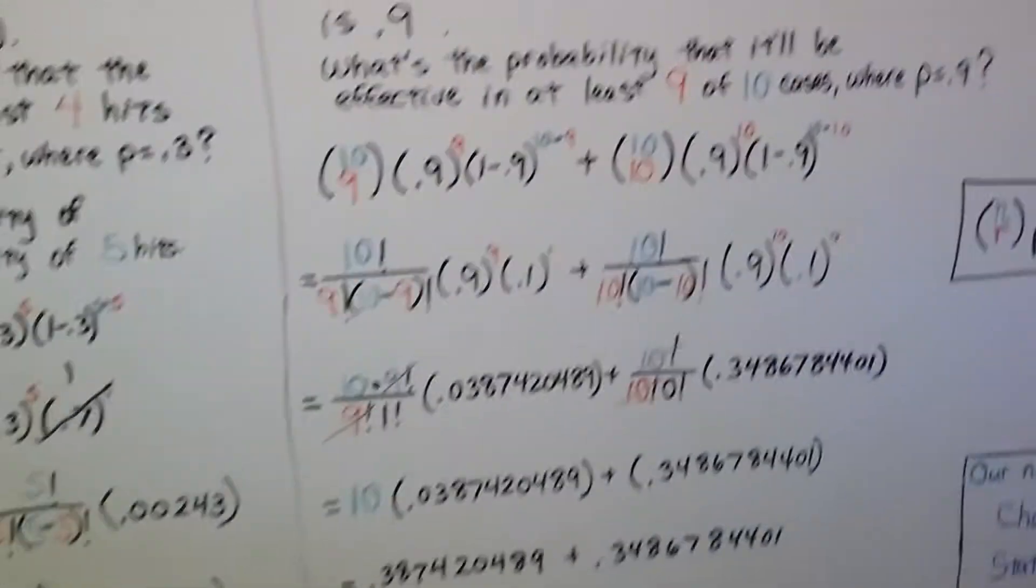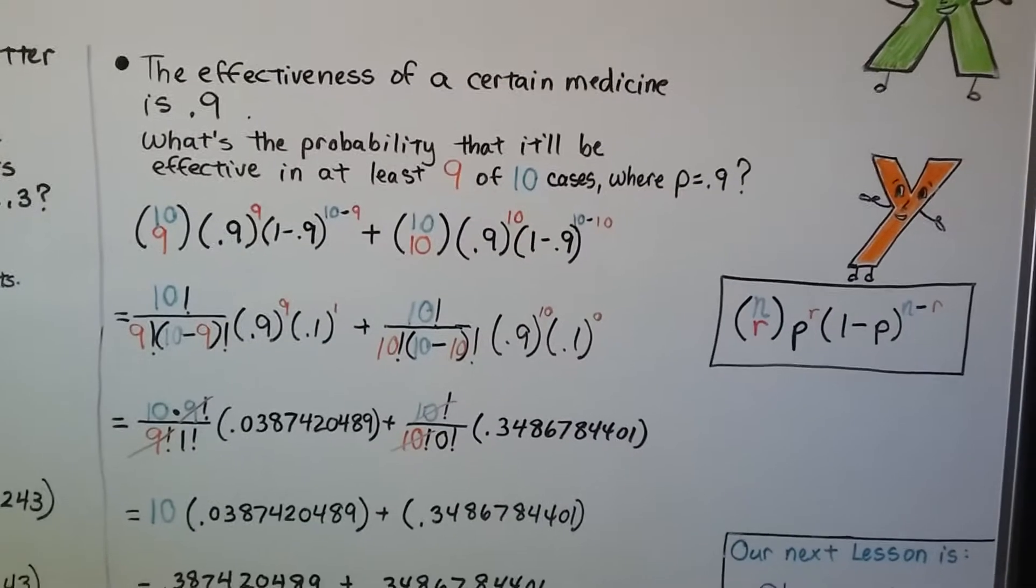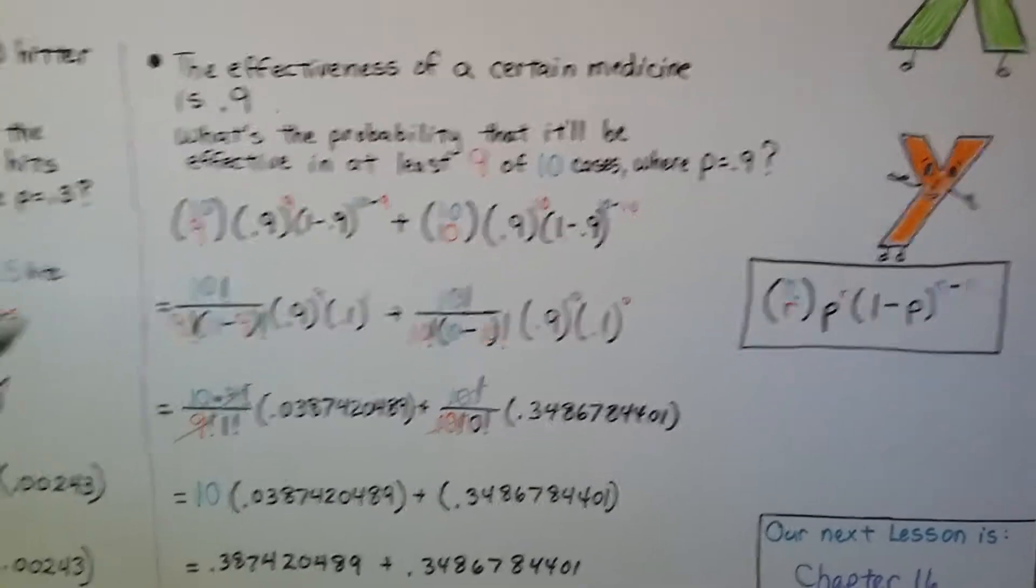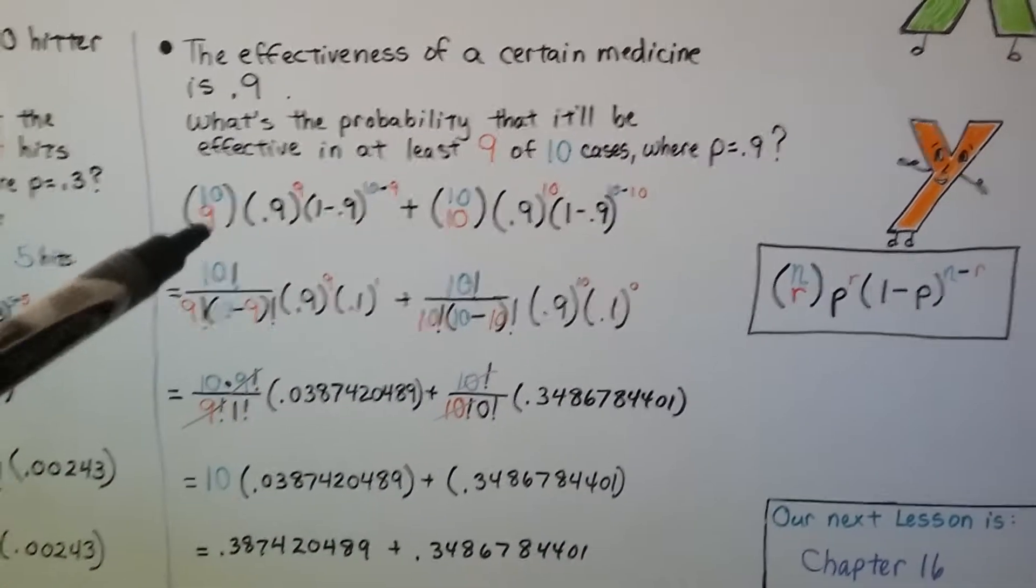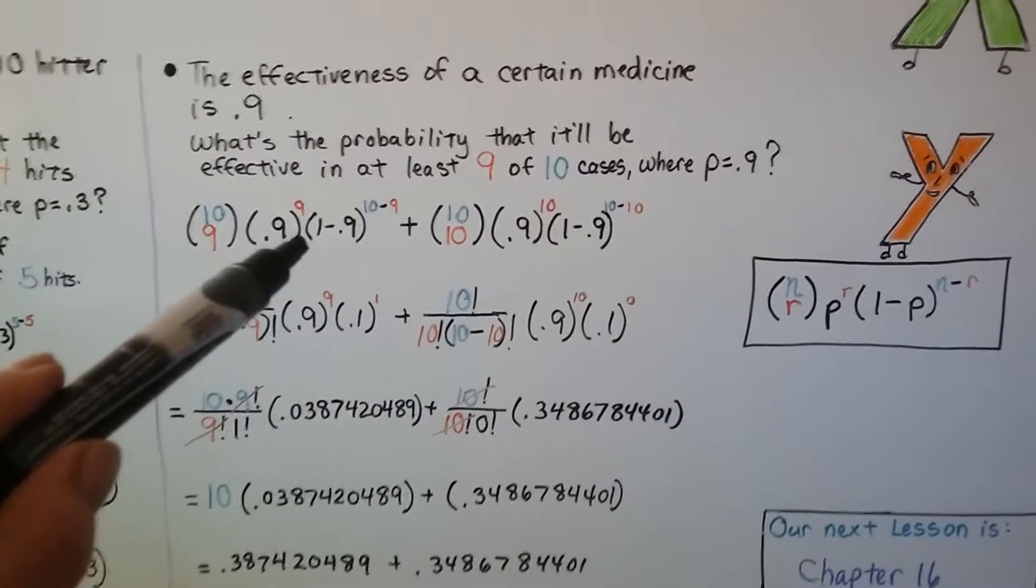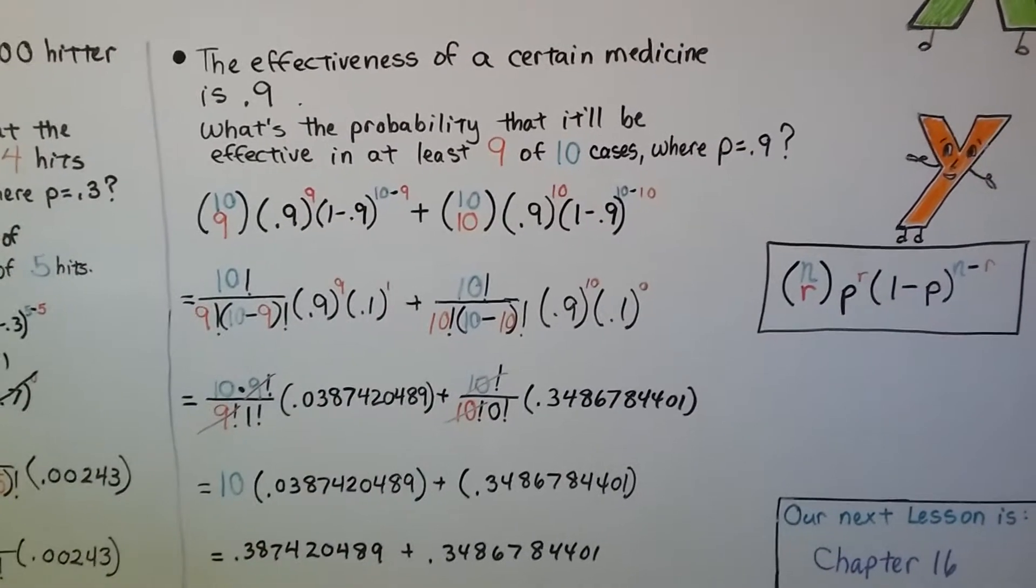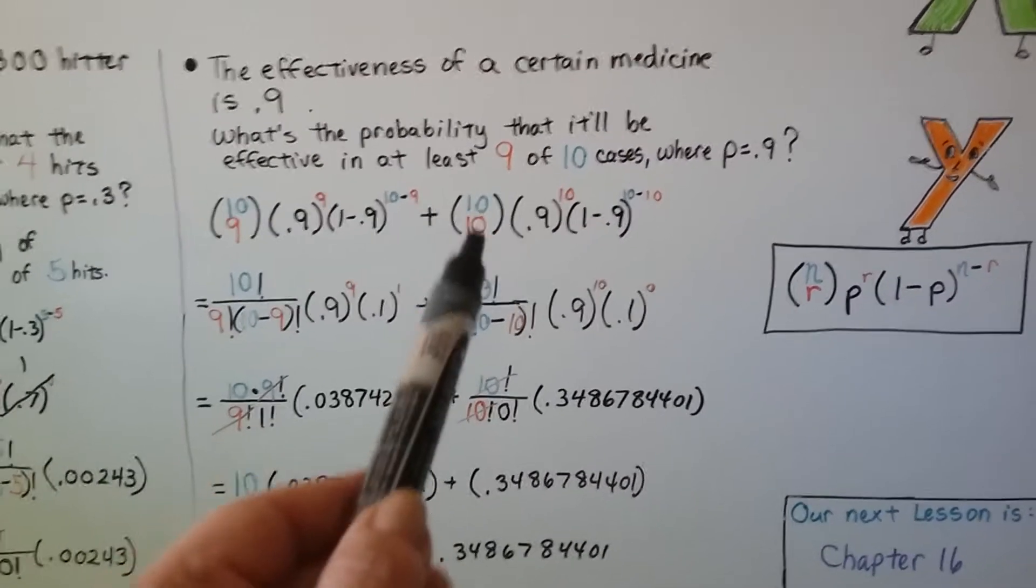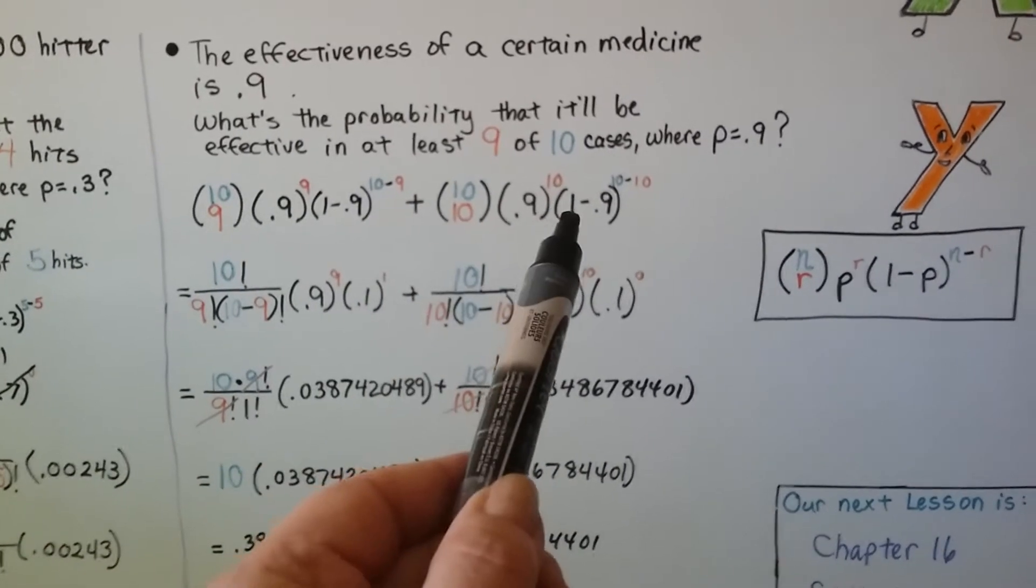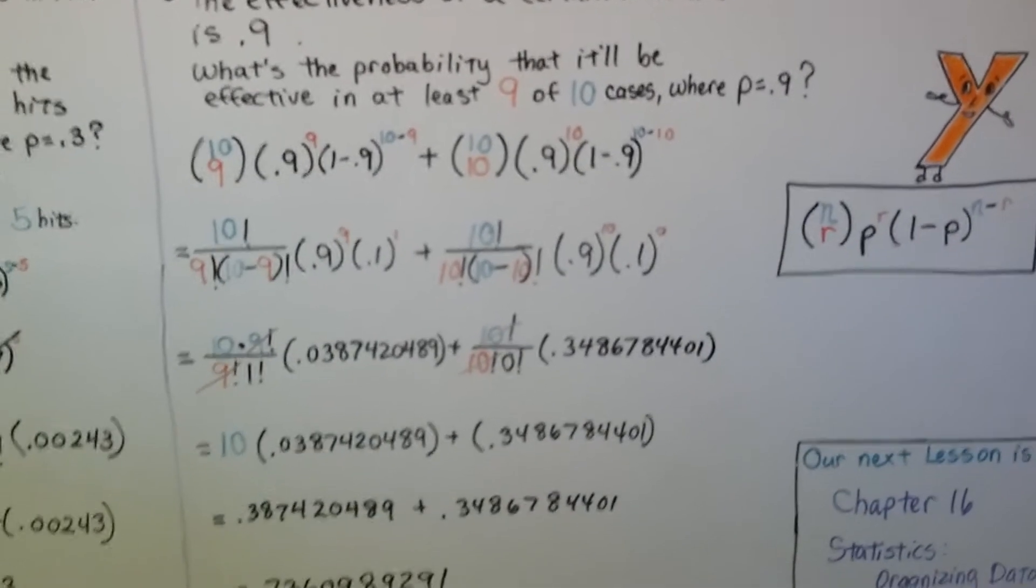Let's try one more. The effectiveness of a certain medicine is 0.9. What's the probability that it'll be effective in at least nine of ten cases where p equals 0.9? So now we've got 10 choose nine. We've got our 0.9 as our p to the ninth power. That's the r. Then times one minus 0.9 to the 10 minus nine. That's going to give us 0.1 to the first power. On this side, we've got 10 choose 10. Our p is 0.9 and it's going to be to the tenth power. And one minus 0.9 to the 10 minus 10. Here's our formula that we're following.